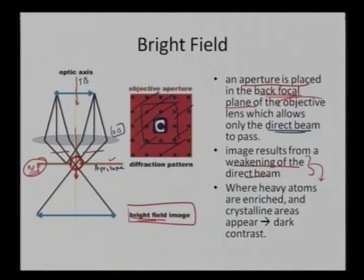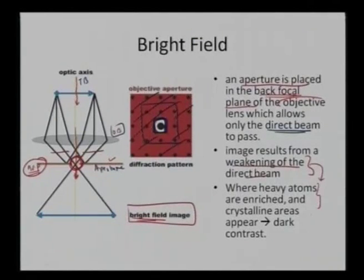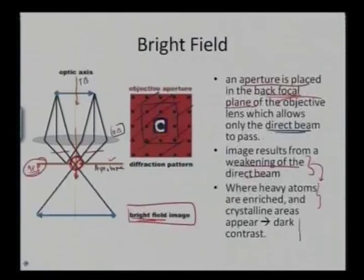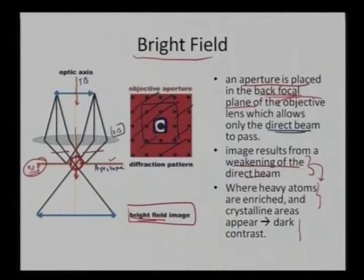Brighter regions are the thinner regions, which appear much more bright. In bright field imaging the overall area around a particular feature appears very bright, and only those features which tend to diffract the electron beam appear dark. So features appear dark but the field appears bright — that is how we get the name 'bright field': the field is bright whereas features are darker.